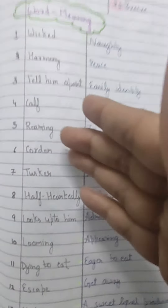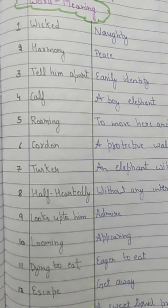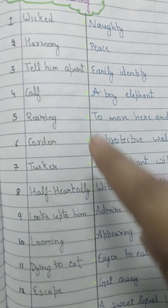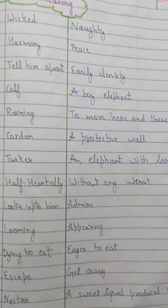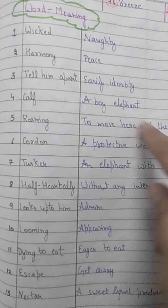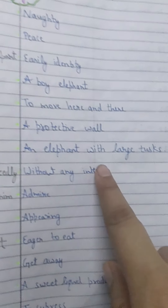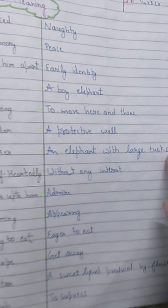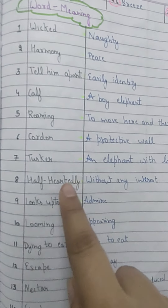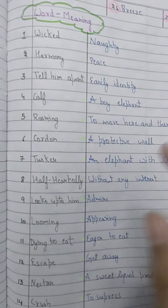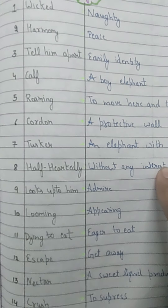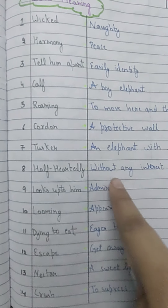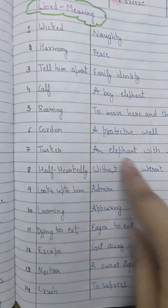A calf is a boy elephant. Roaming means to move here and there — like the teacher always says, 'Why are you roaming outside of the class?' So when you are moving here and there, that is roaming. Cordon means a protective wall — like a boundary of a forest or a house, a protective wall for something. Tusker is an elephant with large tusks. Half-heartedly means when you don't want to do anything, without any interest — when you don't want to do something, it shows in your work. 'Looks up to him' means admires — so I look up to my parents means I admire my parents.